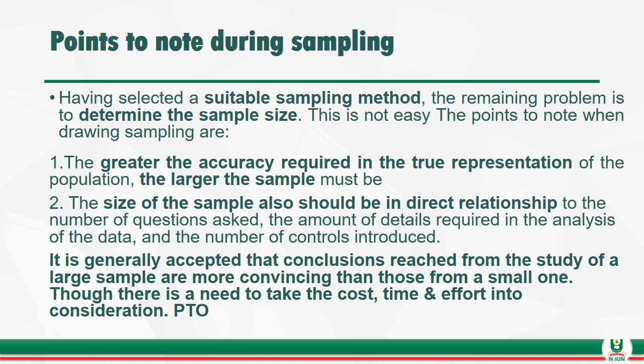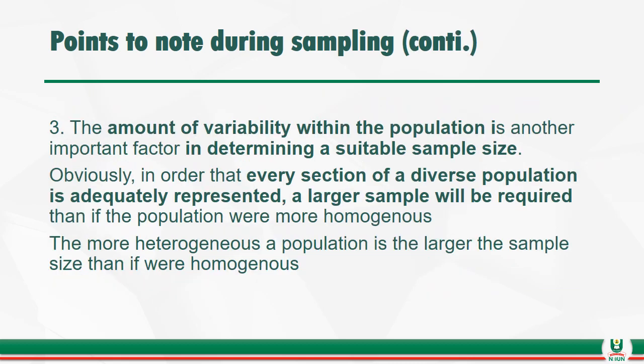Points to note during sampling: having selected a suitable sampling method, the remaining problem is to determine the sample size. First, the greater the accuracy required in the true representation of the population, the larger the sample must be. Second, the size of the sample should be in direct relationship to the number of questions asked, the amount of detail required in data analysis, and the number of controls introduced. Third, the amount of variability within the population is important — the more heterogeneous the population, the larger the sample size required.